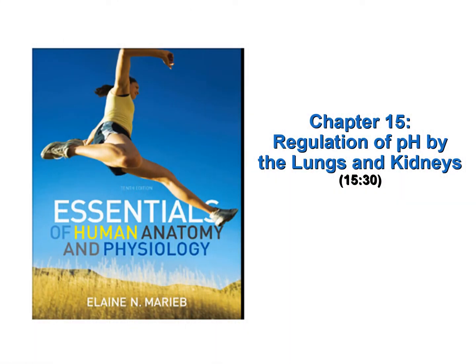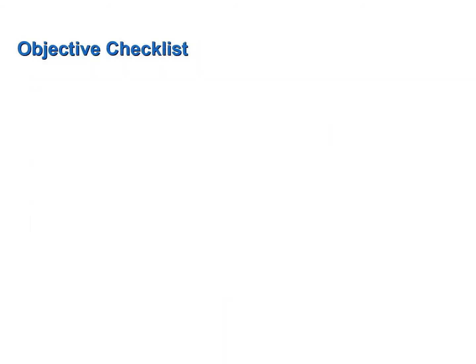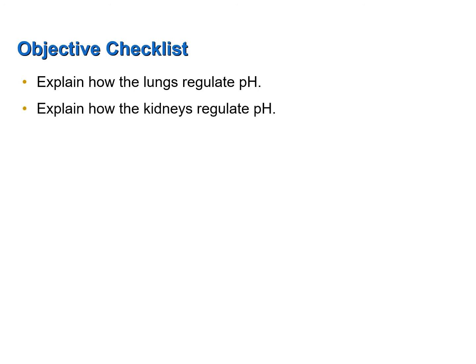The topic of this screencast is regulation of pH by the lungs and kidneys. You can find information about this topic in chapter 15 of your textbook. There are two objectives: explain how the lungs regulate pH, and explain how the kidneys regulate pH.